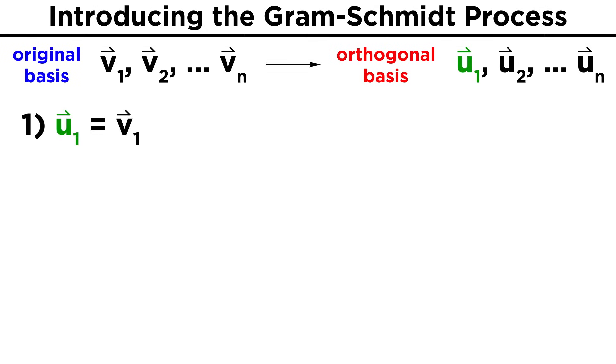First start by setting the first new vector u1 equal to the first basis vector v1. For the second step, take the second vector v2 and subtract from it the inner product between v2 and u1 divided by the length of u1 squared times the vector u1. So altogether, that looks like this.